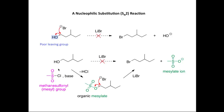In the first step, we react the alcohol with methanesulfonyl chloride, or mesyl chloride. We get loss of HCl, which is mopped up by a base, and we get the formation of the organic mesylate. The mesylate is a good leaving group.